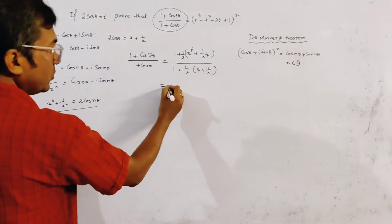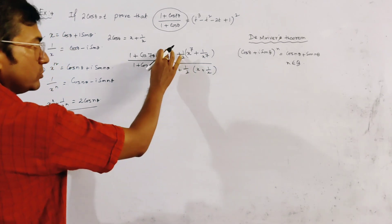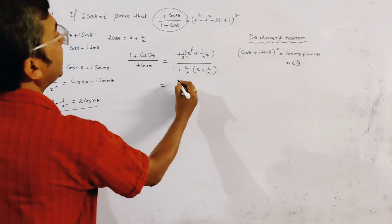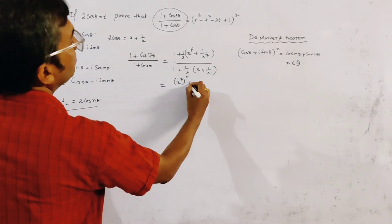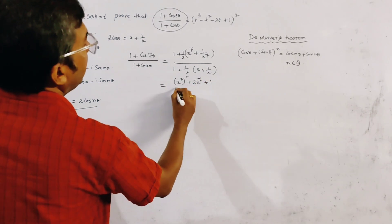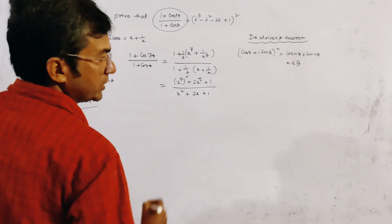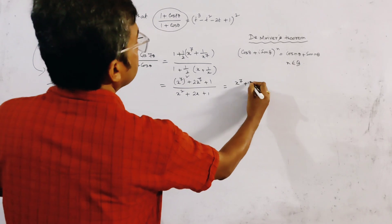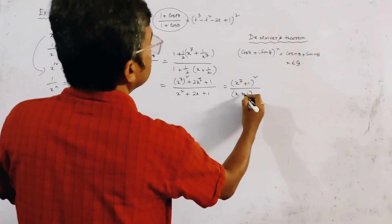Taking the common factor of 1/2 from numerator and denominator and cancelling, the numerator becomes x⁷ + 2x⁷ + 1, which factors as (x⁷ + 1)², and the denominator becomes x² + 2x + 1 = (x + 1)². So we get (x⁷ + 1)²/(x + 1)².